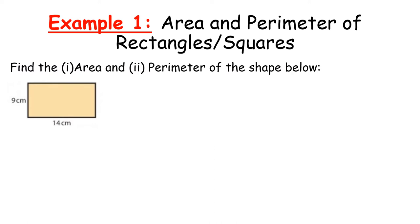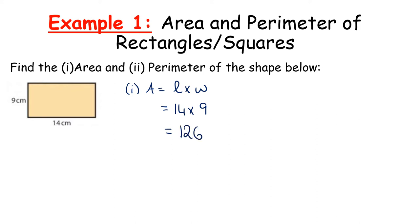Example 1: the area and perimeter of rectangles and squares. We have a rectangle and we need to find the area and perimeter. For the area, we multiply length by width: the length is 14 and the width is 9, so multiplying gives 126. Because we're multiplying centimetres by centimetres, the units for area are centimetres squared.